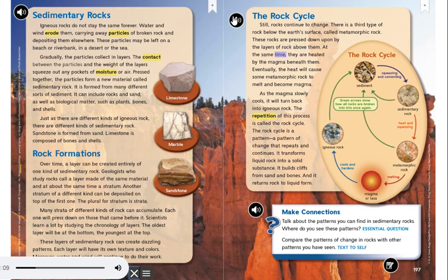At the same time, they are heated by the magma beneath them. Eventually, the heat will cause some metamorphic rock to melt and become magma. As the magma slowly cools, it will turn back into igneous rock.